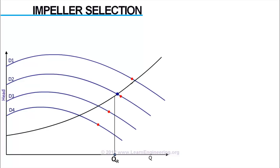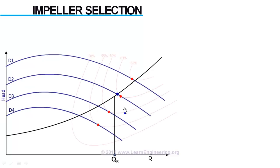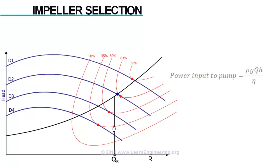In the same graph, we can represent ISO efficiency curves. So, efficiency at the operating condition also can be determined. The required shaft power can be calculated using this equation. This will lead to proper motor selection.